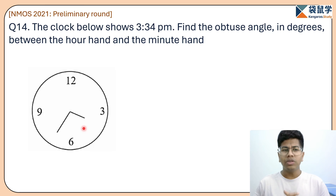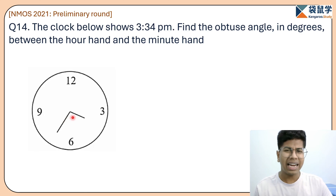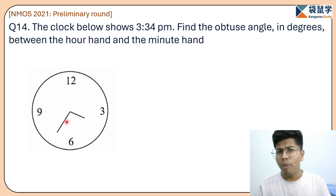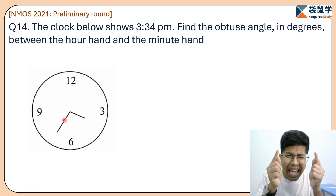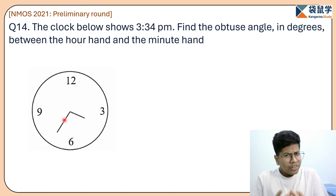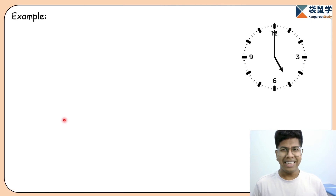We need to find out the obtuse angle in degrees between the hour hand and the minute hand. So here we need to find the angle between the hour hand and minute hand. Can I solve this using geometry? Of course not, because there are slight angles between the hour hand and minute hand that are difficult to calculate directly. So let's first understand how to solve clock problems.